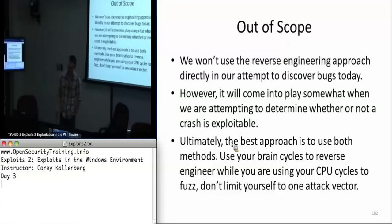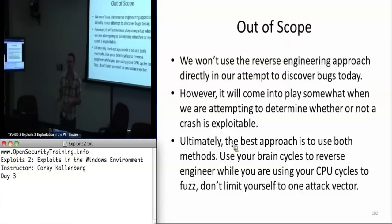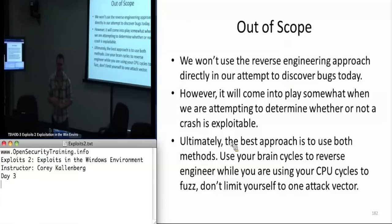I generally don't use that approach. The only time I'll use generational fuzzing is when I'll use a block-based fuzzer like Spike or Sulley, which will generate network protocol interactions based on a specification. It's much easier to specify — a lot more friendly than the crazy XML format that Peach Fuzz uses.